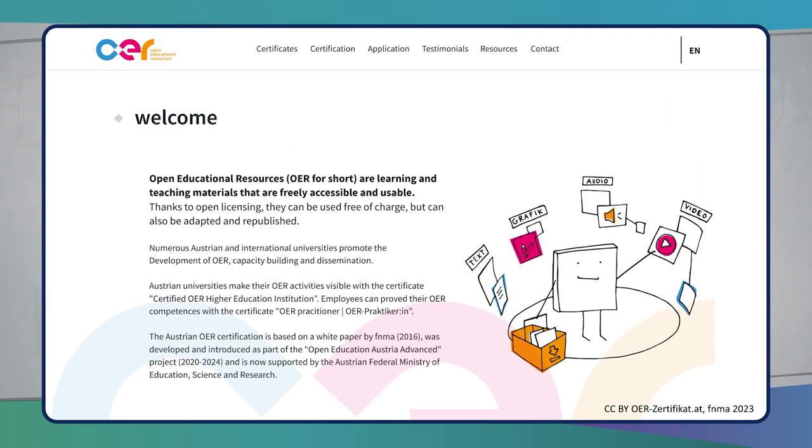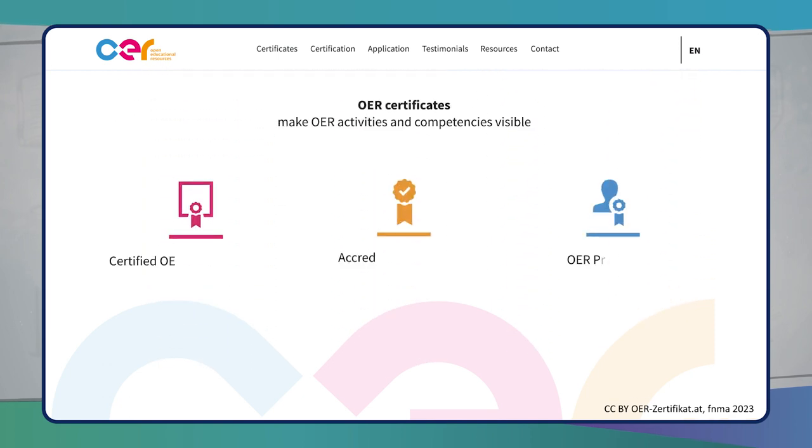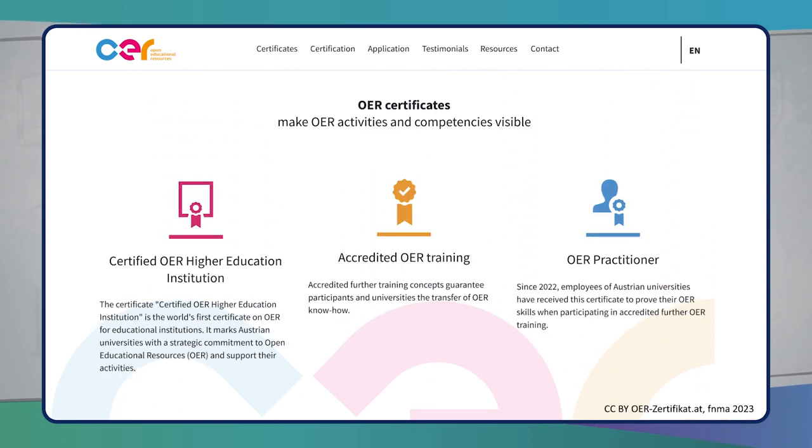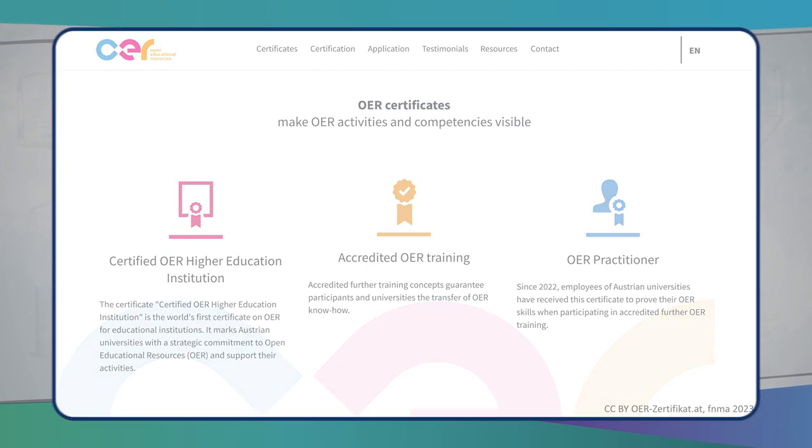Universities in Austria can also receive a certificate for their activities on Open Educational Resources. To do this, they must, among other things, demonstrate that they have a strategy and a way to professionally publish Open Educational Resources, and it is important to prove that they have competent relatives.